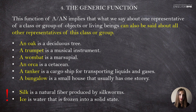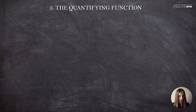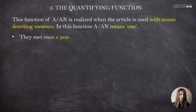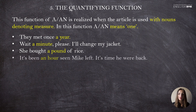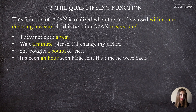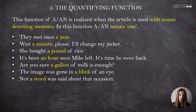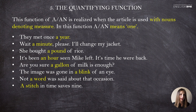The next function is the quantifying function. In this function, the indefinite article preserves its original meaning of 'one.' For instance: 'They met once a year.' 'Wait a minute, please.' 'She bought a pound of rice.' 'It's been an hour since Mike left.' 'Are you sure a gallon of milk is enough?' 'The image was gone in a blink of an eye.' 'Not a word was said about that occasion.' And the proverb: 'A stitch in time saves nine' — this quantifying function is quite common in proverbs.